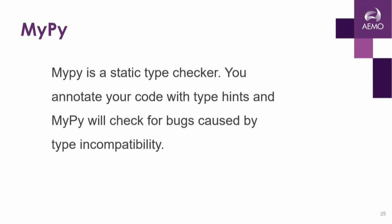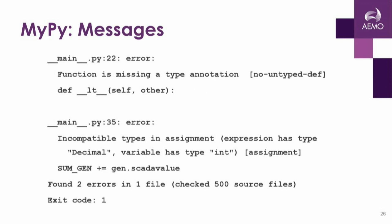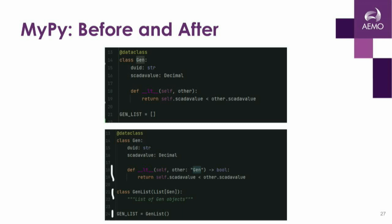MyPy is where things start to get more interesting. MyPy is a static type checker — you annotate your code with type hints and MyPy checks for bugs caused by type incompatibility. Typical MyPy messages include 'function is missing a type annotation' or 'incompatible type assignment.' After running through MyPy, our dunder-lt method has type hints: the other argument must be of type Gen and it must return a boolean. We also created a generic-based list of our generators.